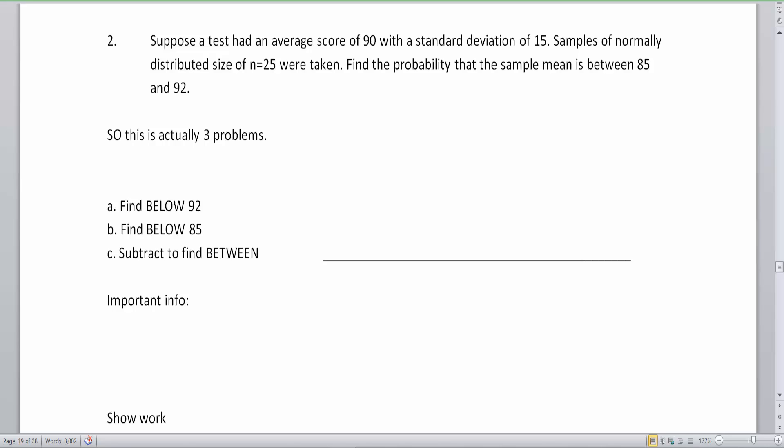In the second video of the Central Limit Theorem, we are going to take a look at between problems. In the first Central Limit Theorem video, we introduced the concept of looking at a group instead of looking at an individual, and we also looked at the before and after ways to find that percentile or percentage chance of someone landing before or after a certain value. Now for this video, we're going to go between.